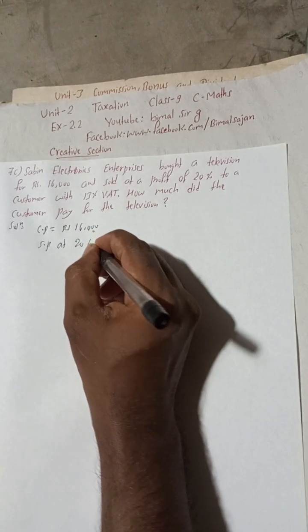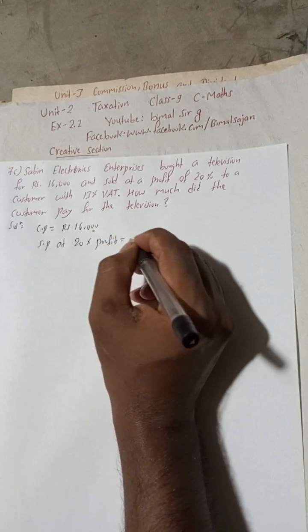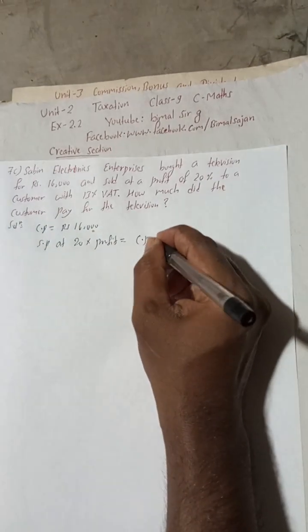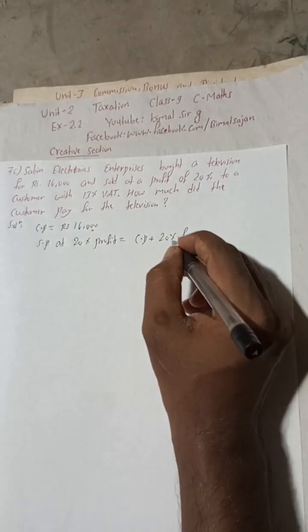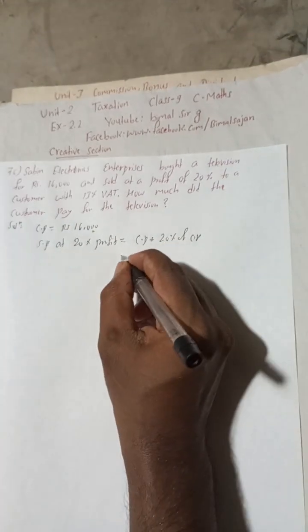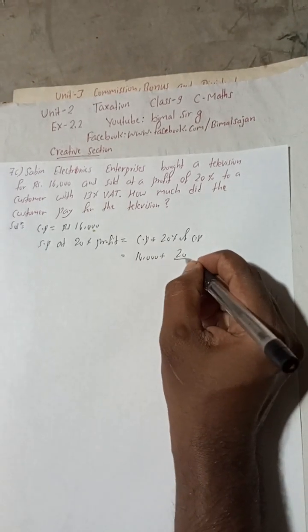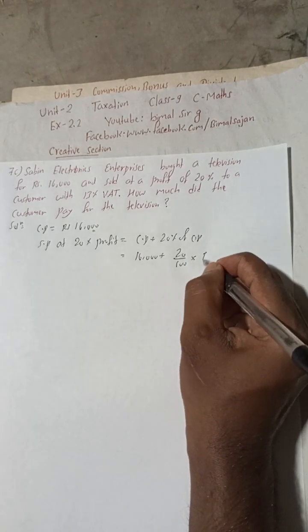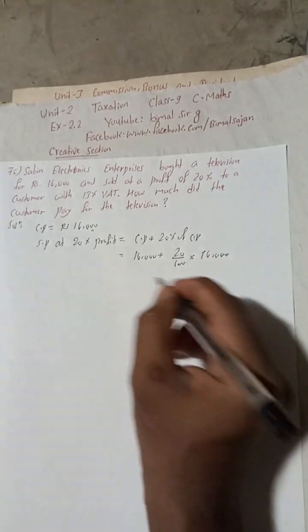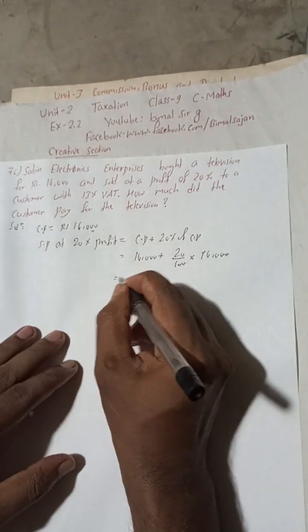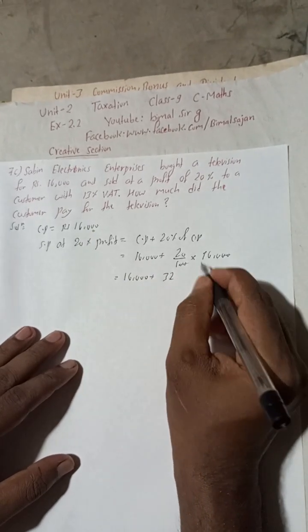So now there is SP. After 20% profit, it will be how much? CP plus 20% of this CP. So CP means there is 16,000 plus 20 divided by 100 of, means into, again 16,000. So 20 cancel.